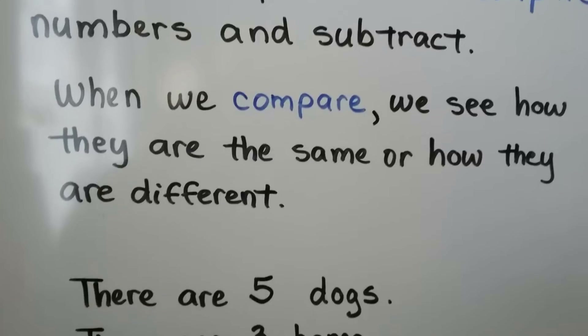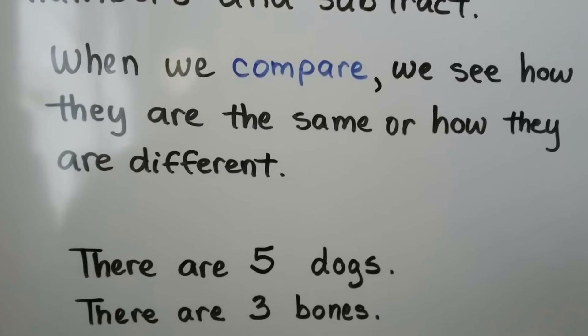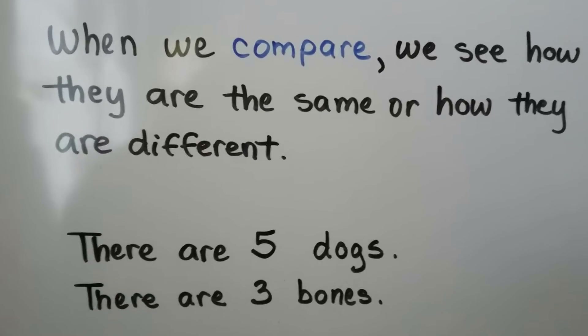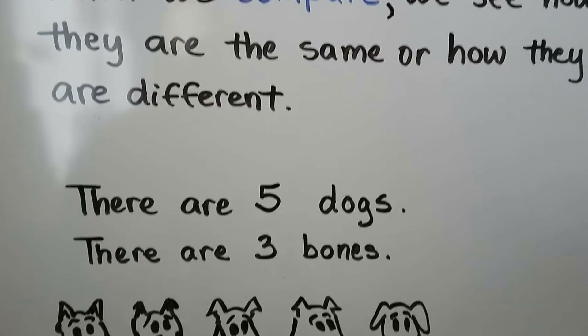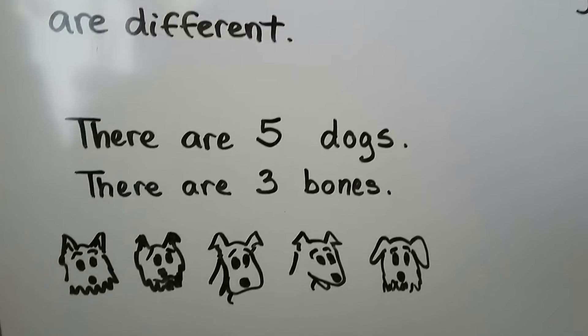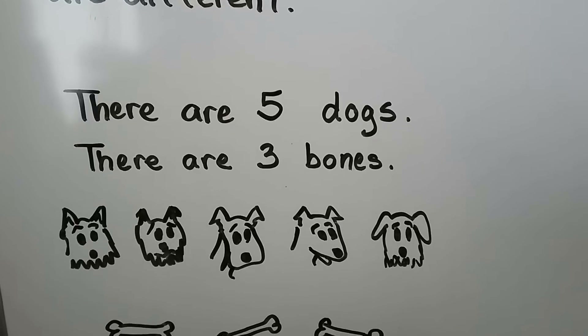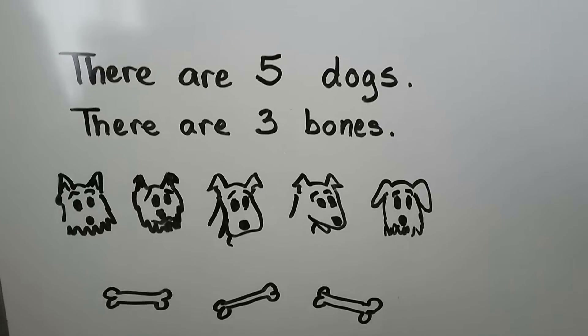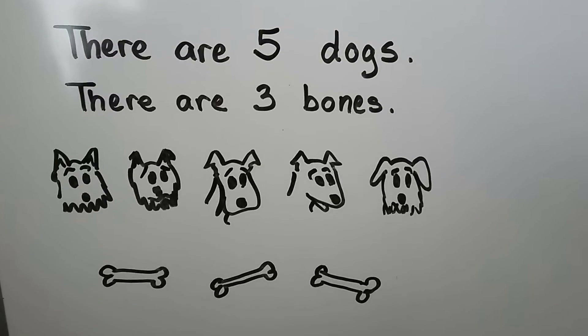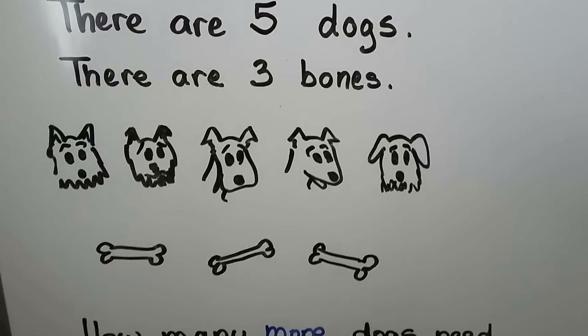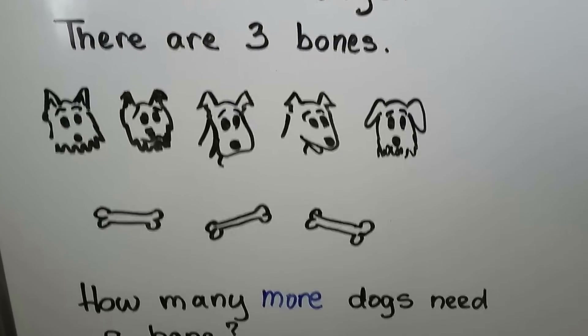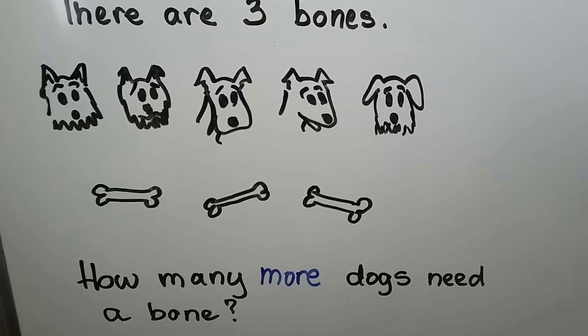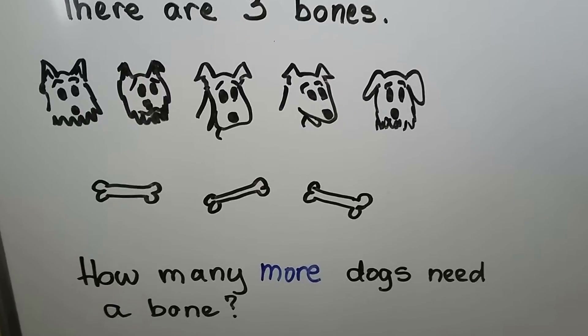When we compare, we see how they are the same or how they are different. There are five dogs. There are three bones. How many more dogs need a bone?